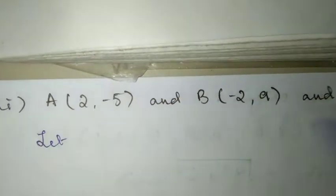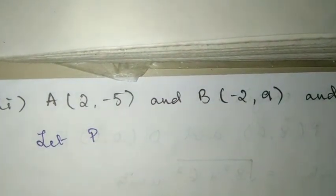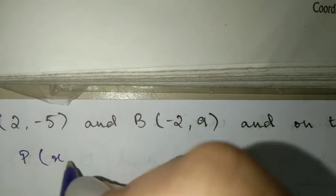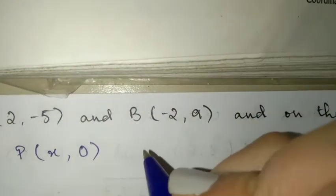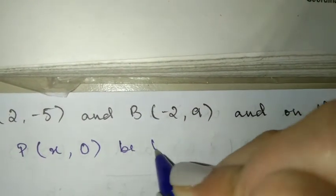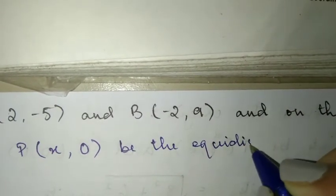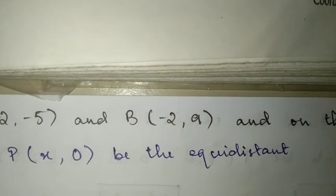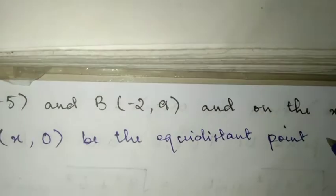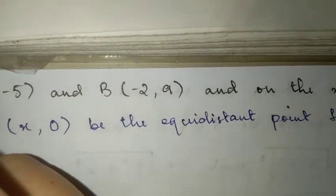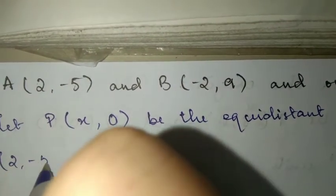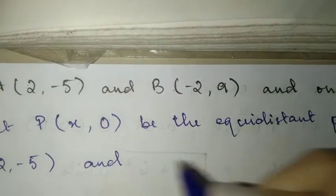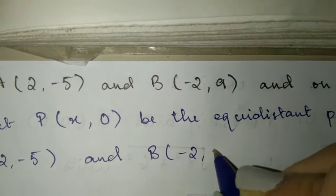So let's get the equidistant point P. P is on the x-axis, so y is 0. Let P(x, 0) be the equidistant point from the two points which are given from A(2, -5) and B(-2, 9).